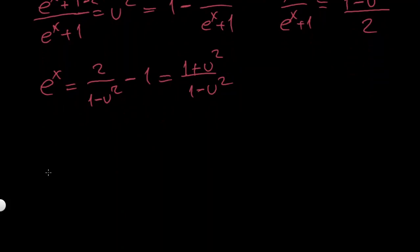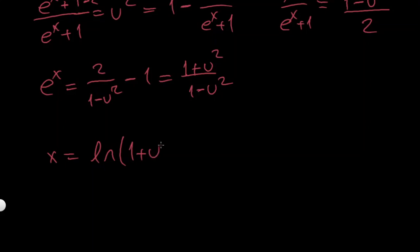Now I can take the natural logarithm of both sides to get rid of the exponentiation, and I'll have x equal to ln of this whole expression. Using properties of logarithms, I can separate it: x = ln(1 + u squared) minus ln(1 minus u squared). So I've managed to separate x.